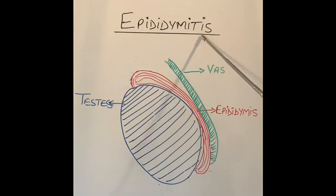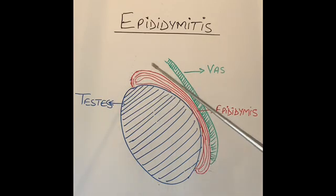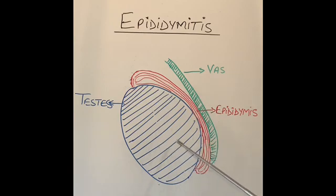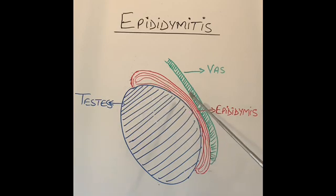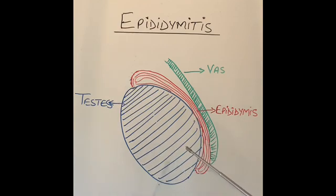Epididymitis, as the name suggests, is inflammation or infection of the epididymis. Sometimes epididymitis can happen on its own without affecting the testicle. At other times the two go hand in hand, so with epididymitis some men can also get infection or inflammation of the testicle called orchitis.